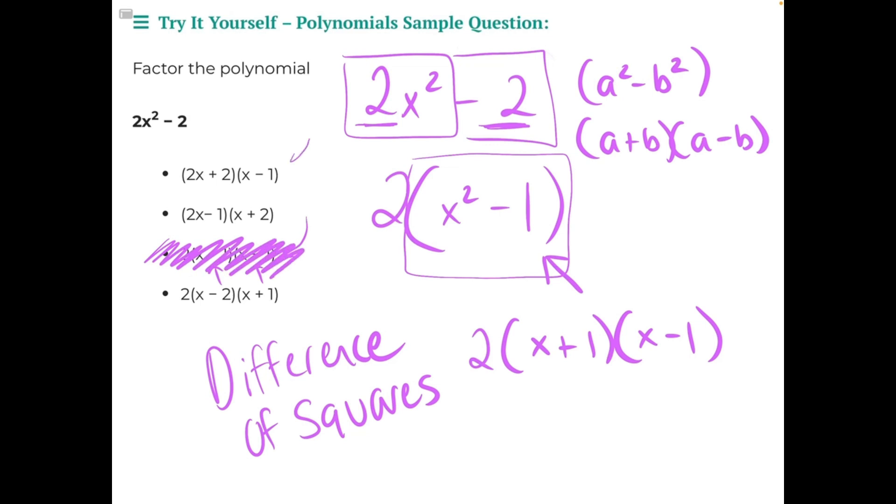If we look at these top two answer choices, we can see that they have distributed the 2 that was once outside the parentheses back into this first set of parentheses. So let's try that and see if we can get a match. 2 times x and 2 times 1 would give us 2x plus 2 times x minus 1. And that will match our first option, making it our correct answer.